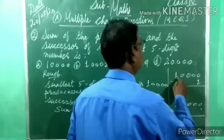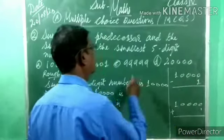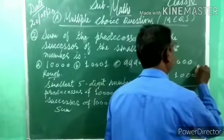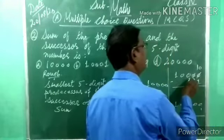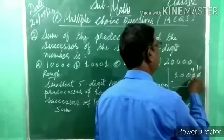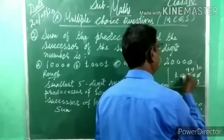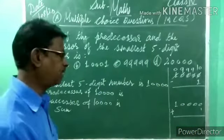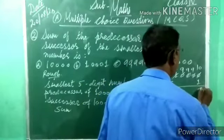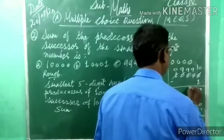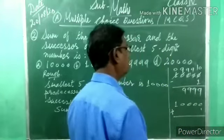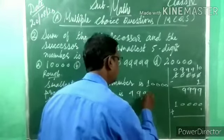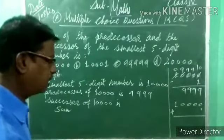First find the predecessor of ten thousand: ten thousand minus one. Zero minus one is not possible, so we borrow — we get nine thousand nine hundred ninety-nine (9,999). That is the predecessor.